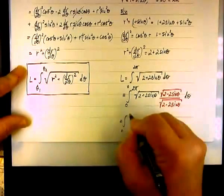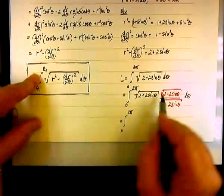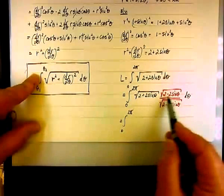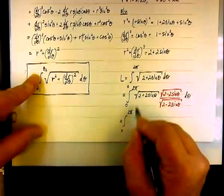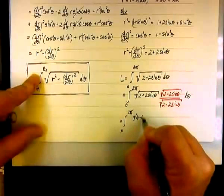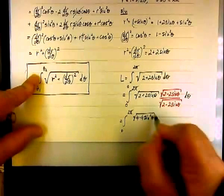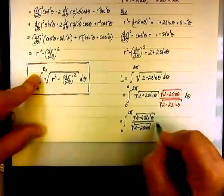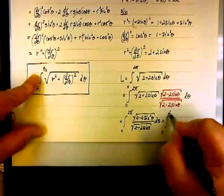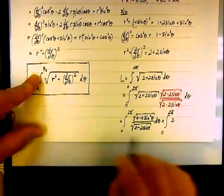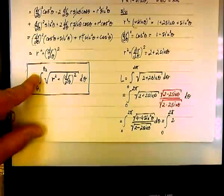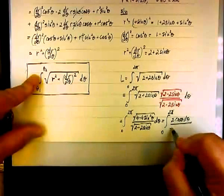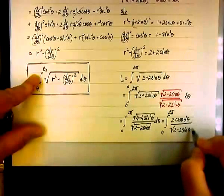If we multiply the integrands, we have (2 plus 2 sine theta) times (2 minus 2 sine theta) — a product of a conjugate pair — giving us the square root of 4 minus 4 sine squared theta, all over the radical of 2 minus 2 sine theta, d theta. Factoring out the 4 gives us 2 times the square root of 1 minus sine squared, which is the square root of cosine squared, or simply cosine.